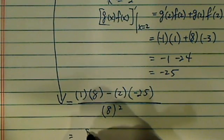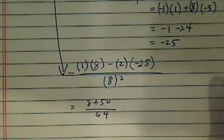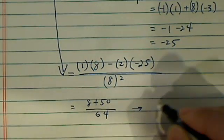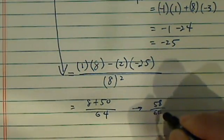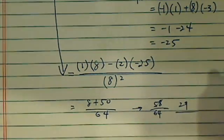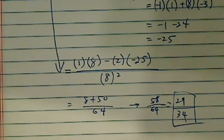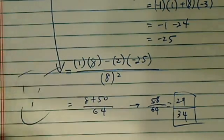And then I have 8 plus 50 over 64, so far so good, and this one is 58 over 64. I have a 2 going in there, that's 29 on top and 32 on the bottom, and here's the answer. Hope this helped, thanks.